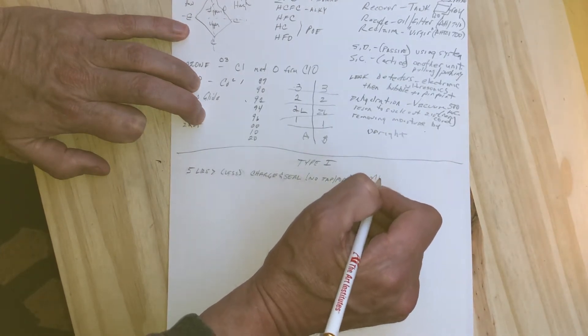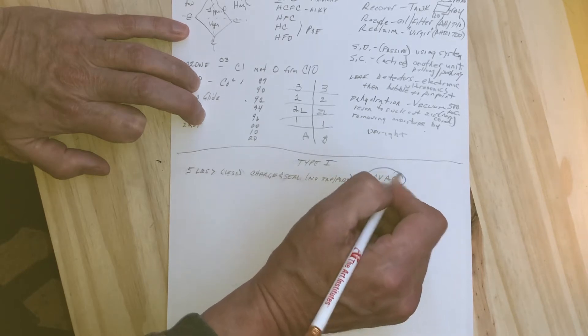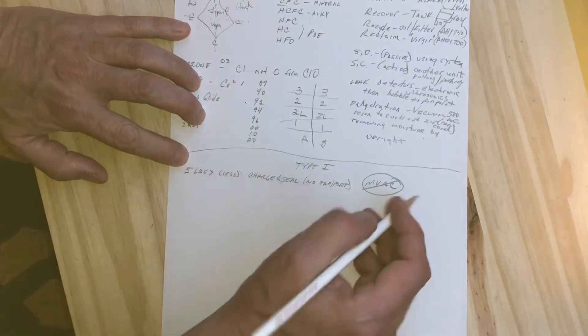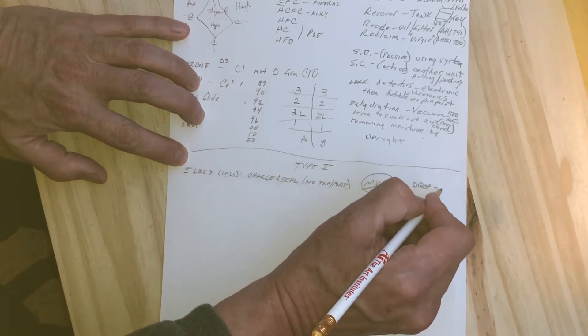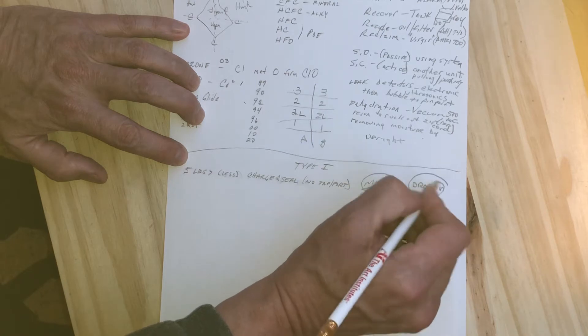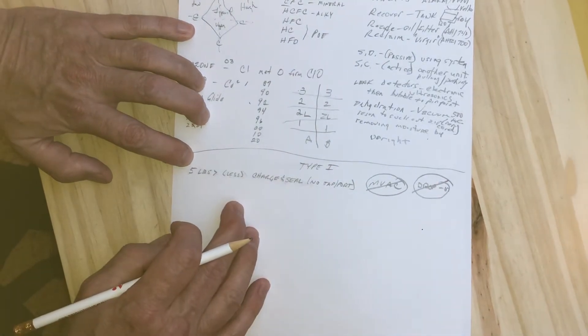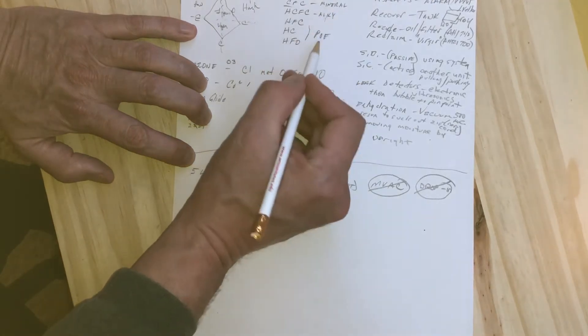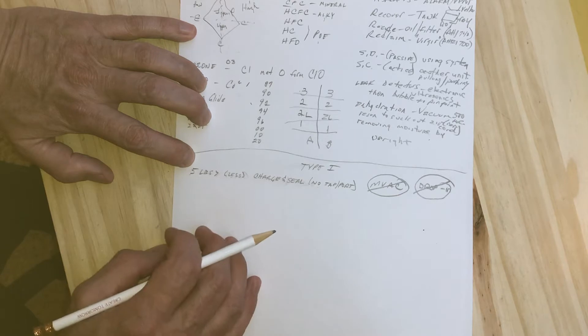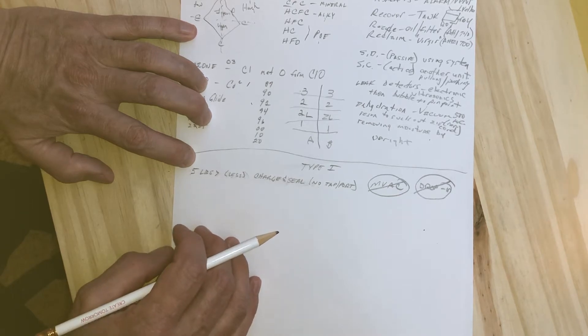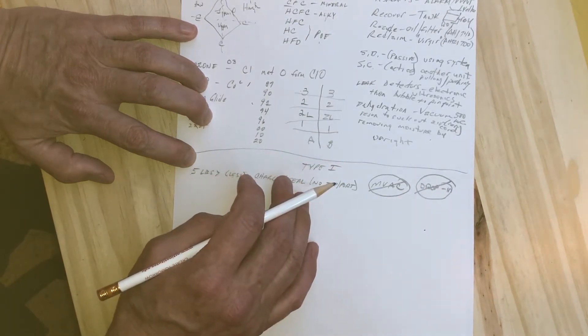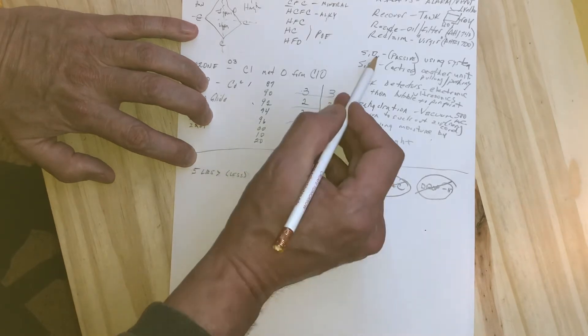These are not MVAC systems, motor vehicle air conditioning systems, which is a different section. There's also no drop-in replacement for any of the refrigerants in Type 1 appliances because sometimes the oil will need to be swapped out, and that's a retrofit.